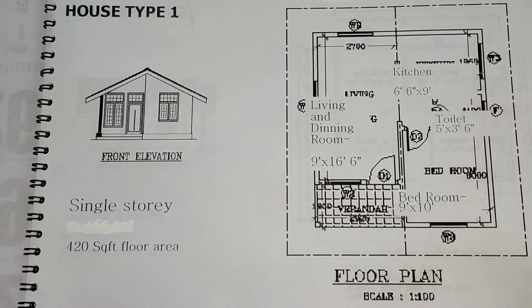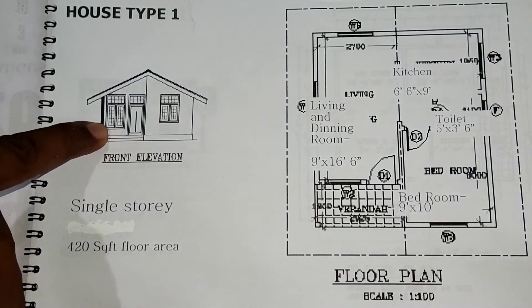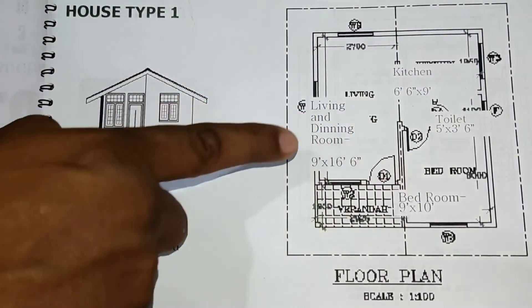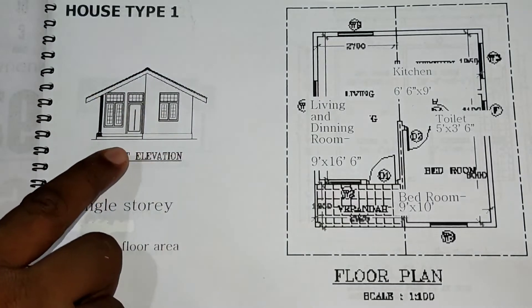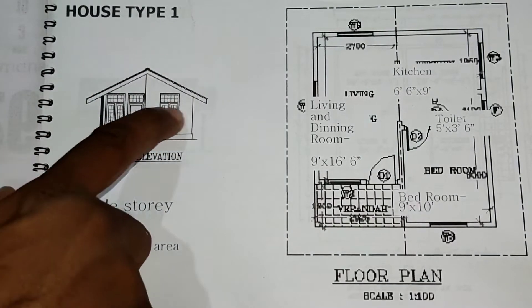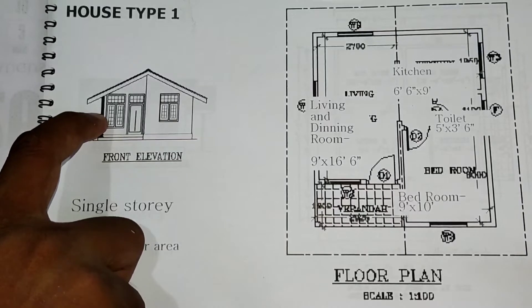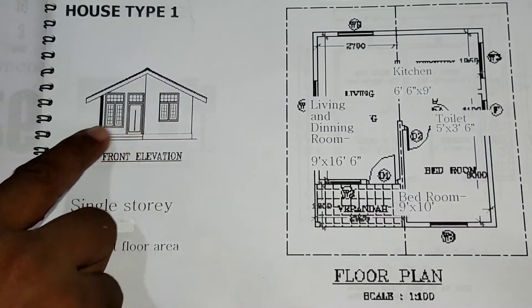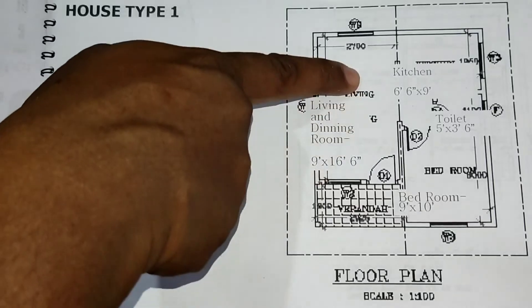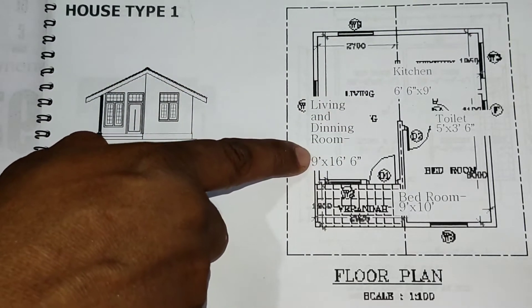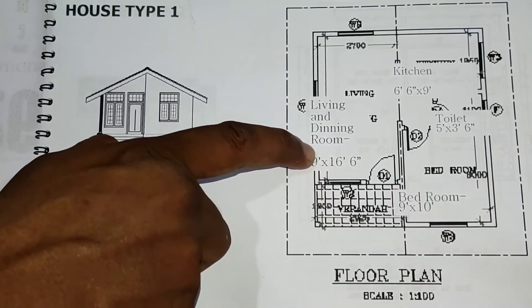Looking at the plan, this is the veranda area as shown earlier, and there's a room on this side. Normally, a plan view is obtained by imagining that we cut the particular house one meter above the ground level. We can then see the layout of the house. It consists of the veranda, and there's a living area. The dimensions included are nine by sixteen and a half feet.